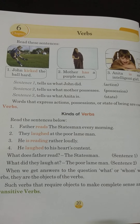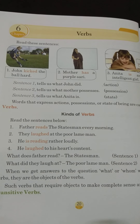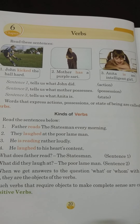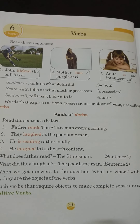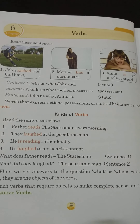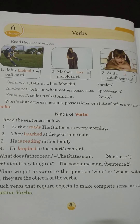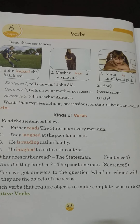Then, 'Mother has a purple sari.' This sentence tells us what mother possesses — possession, having. Then, 'Anita is an intelligent girl.' This sentence shows us what Anita is — a state of being. So words that express actions, positions, or state of being are called verbs.